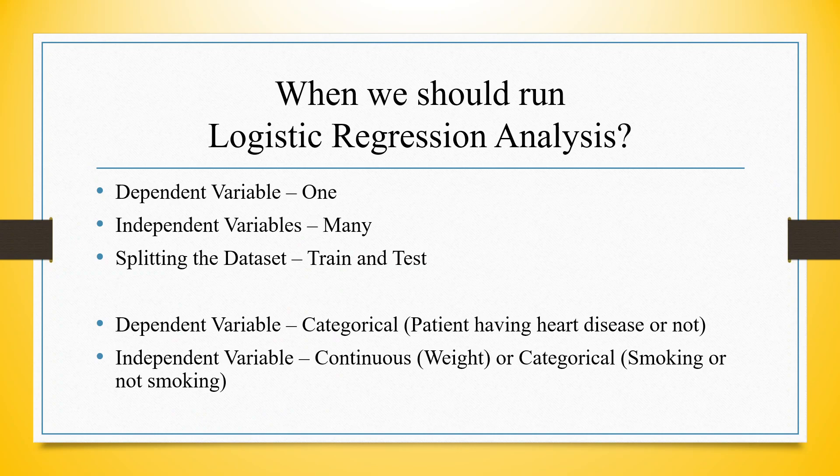We run the logistic regression analysis when we have one dependent variable and many independent variables. It is mandatory that the dependent variable is on the categorical scale — for example, a patient having heart disease or not having heart disease. The independent variables can be on continuous or categorical scale.